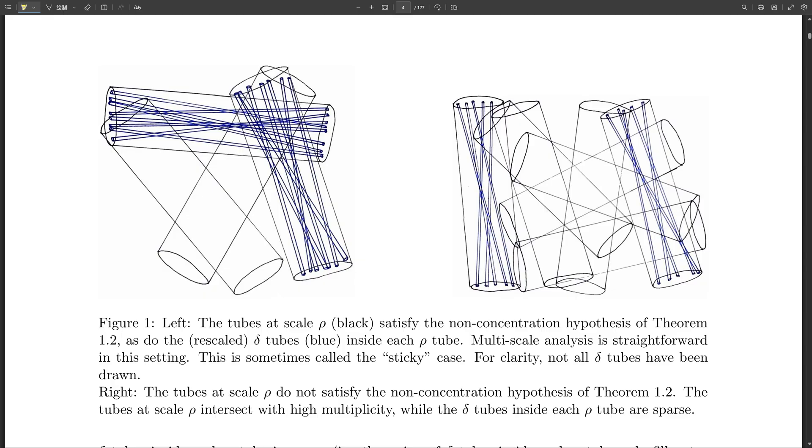Wow, this is all super fascinating. But I have to be honest, it's also incredibly complex. How on earth do they even start to grapple with all these different scales and patterns? Well, that's where their ingenuity really shines. They introduce a whole bunch of groundbreaking techniques to tackle the problem. One of the most important ones is something called a grains decomposition. Grains, like grains of sand. You can think of it that way. They divide the space up into these tiny grains, kind of like pixels on a screen. This allows them to analyze how the tubes intersect and interact within these tiny regions.